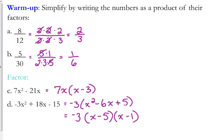Factoring, the first one just has a GCF of 7x. You take out the 7x, you write out the x minus 3.